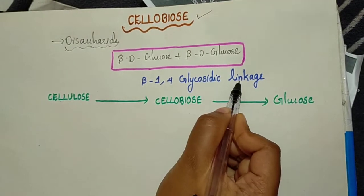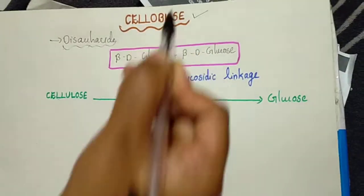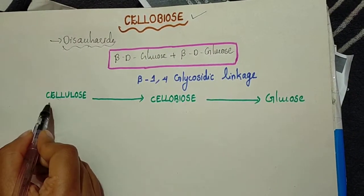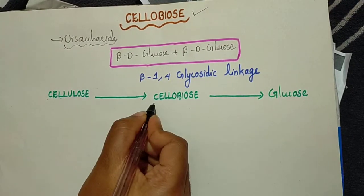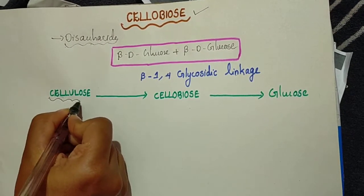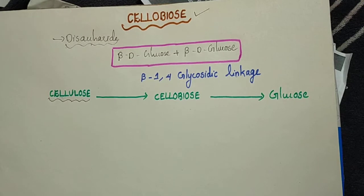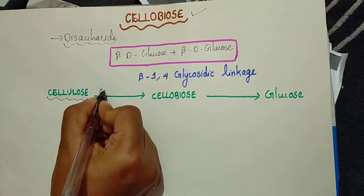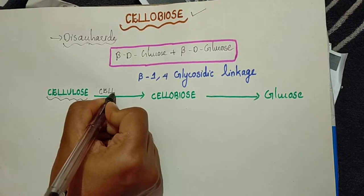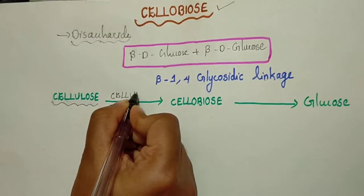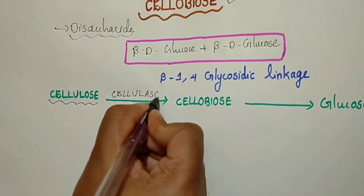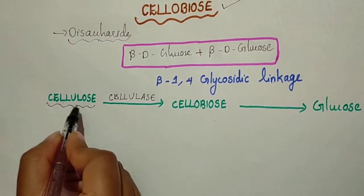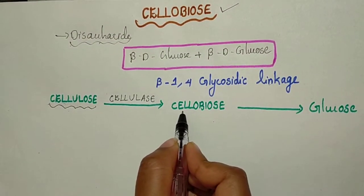1,4-glycosidic linkage in order to form this cellobiose. Actually, cellobiose is a part of a complex polysaccharide called cellulose. The cellulose is degraded by the hydrolytic enzyme cellulase. Cellulase enzyme degrades cellulose into short